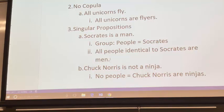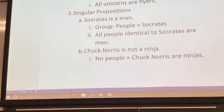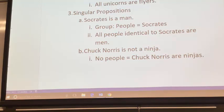Similarly, if you've got a negative singular proposition, you still have to treat it as a universal. So if 'Chuck Norris is not a ninja,' you can't relate that to 'some people who are Chuck Norris are not ninjas.' It has to be 'no people who are identical with Chuck Norris are ninjas,' so that it's a universal, and you're shading the intersection of Chuck Norris and ninjas so there's no Chuck Norris who's a ninja.